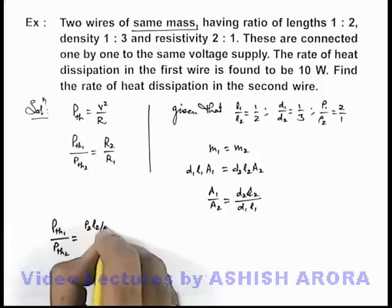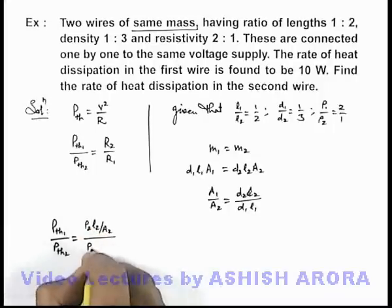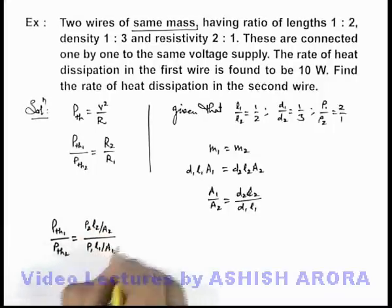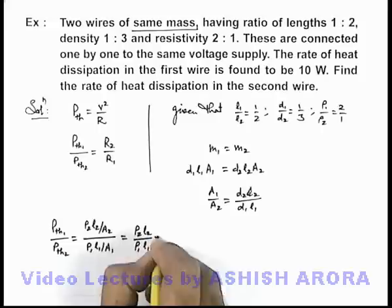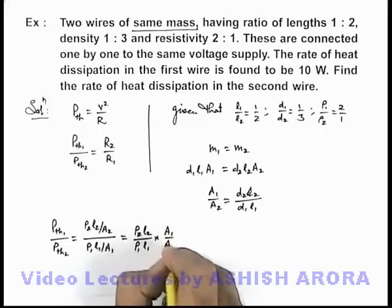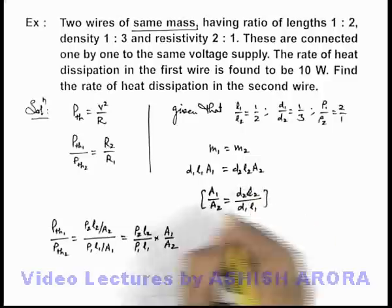ρ2·L2 by A2 divided by ρ1·L1 by A1, which is ρ2·L2 upon ρ1·L1 multiplied by A1 by A2. And A1 by A2 we can substitute from here.